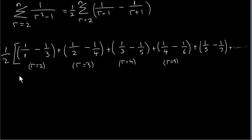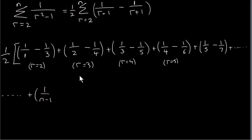We keep going to the last term, which is obtained by replacing r with n: that gives 1 over (n minus 1) minus 1 over (n plus 1). This would be the last term, corresponding to r equals n.